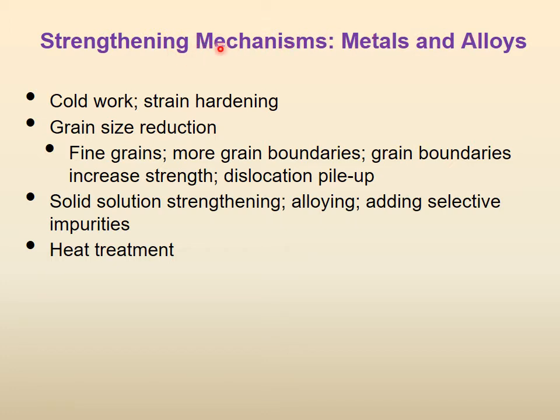What are the methods or techniques by which we increase the strength of a metal? One is cold working or strain hardening. When you load a material in the plastic region and then offload it, when you reload it, the strength or hardness of the material has increased. This happens when done at room temperature, called cold working. At higher temperatures, strain hardening will not happen. Therefore strain hardening is also called cold working.